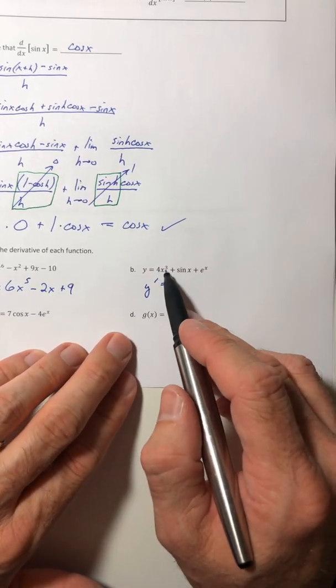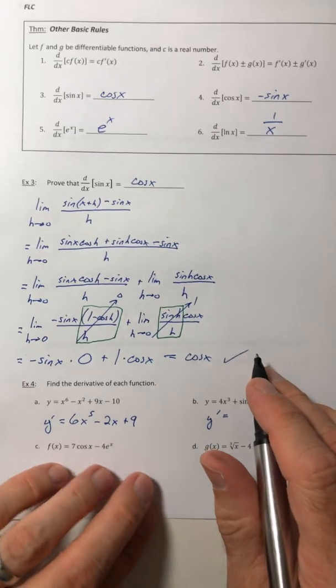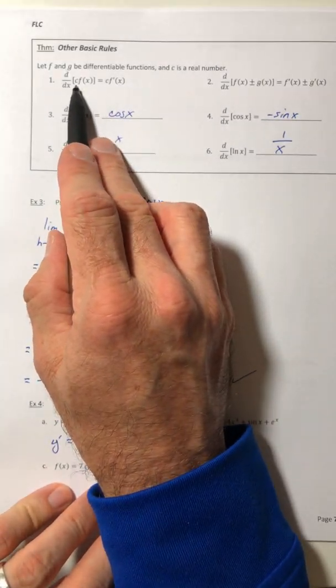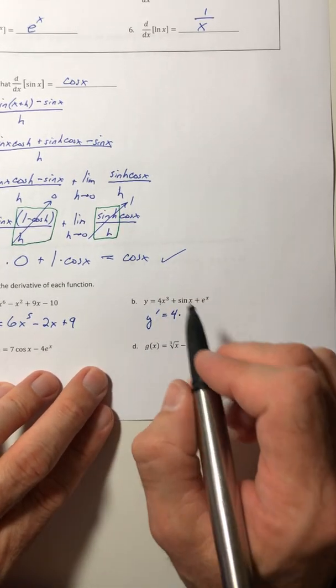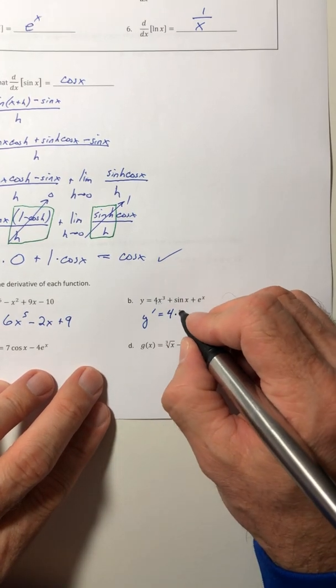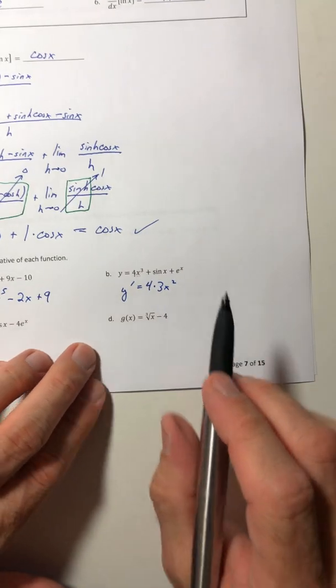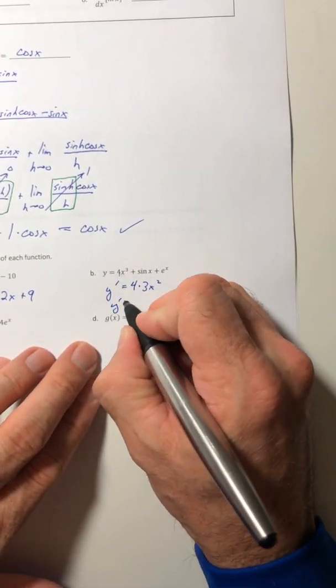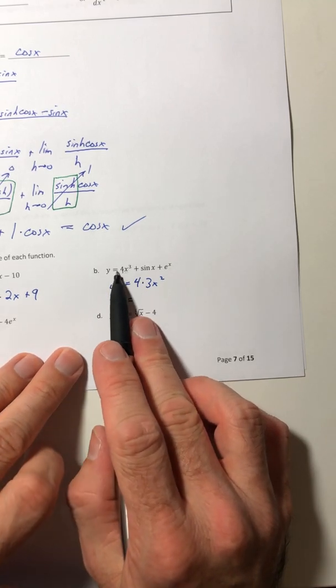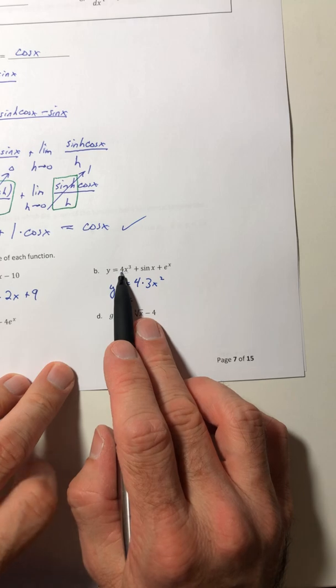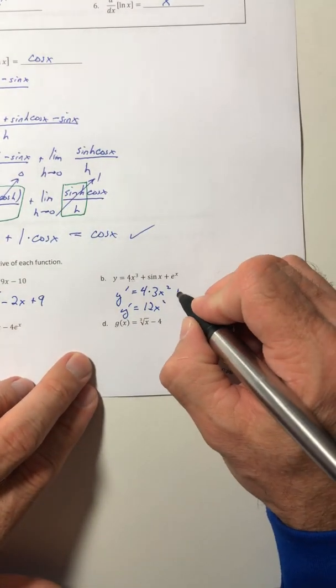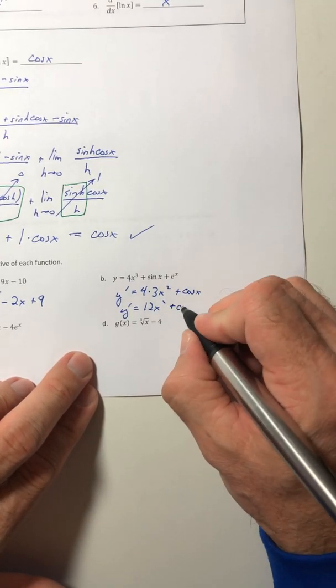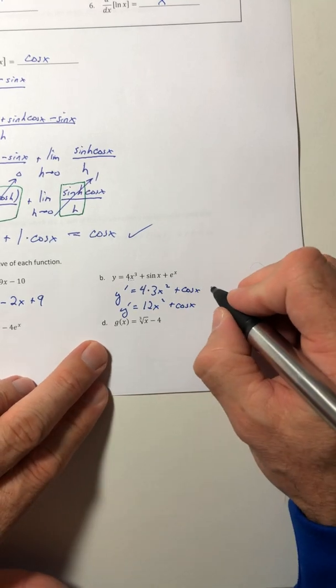Okay, part b, the derivative of 4x to the third. So now we're talking about property number one. You've got a constant already there, so that constant stays. The four doesn't disappear. Then what's the derivative of x to the third? Three x squared. So when you pull the exponent down, you can just straight multiply it to any number that's in front. So the four and the three just says 12x squared. The derivative of sine is cosine, and the derivative of e to the x is e to the x, and there's your simplified derivative.